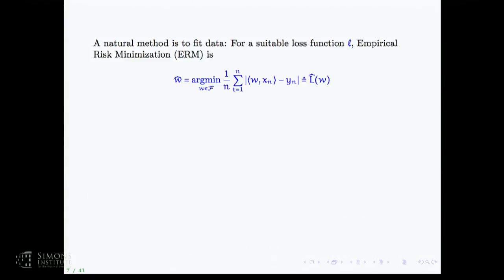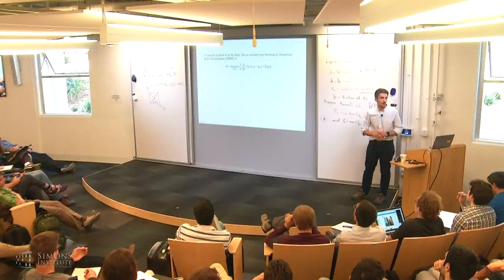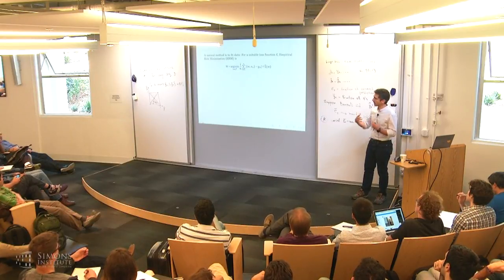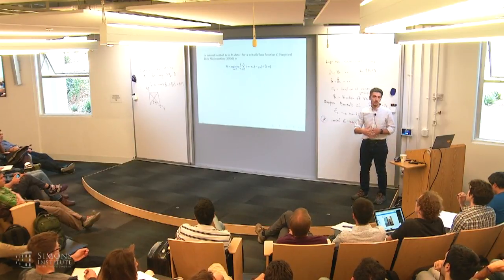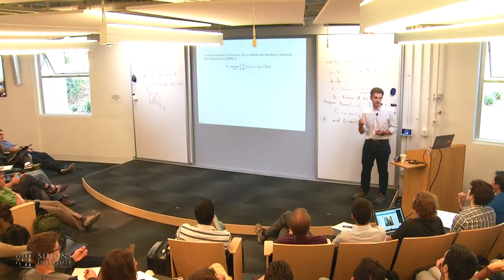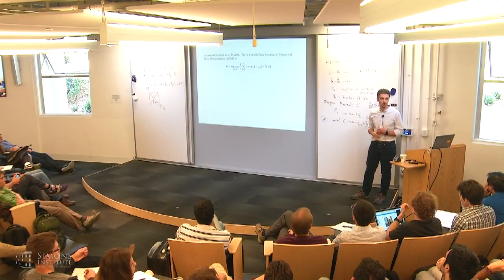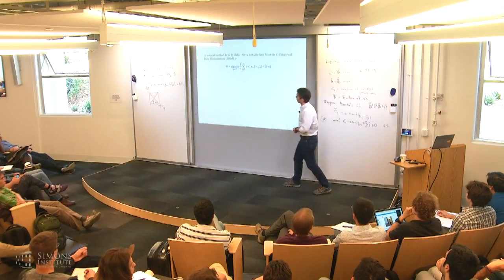Hat from now on signifies dependence on the data — this is a data-dependent objective, L̂(w) as a function of w. Any questions? The summation is over t, F is something I haven't yet specified — to make the exposition simpler it will often be a ball, a vector living in some norm ball. I'll make it more precise soon.